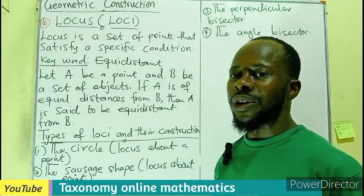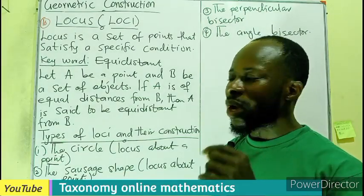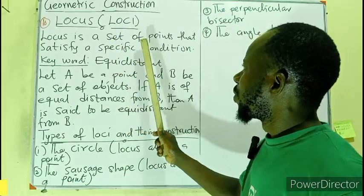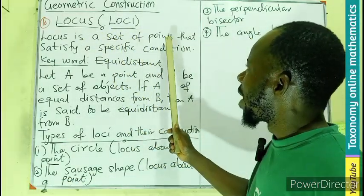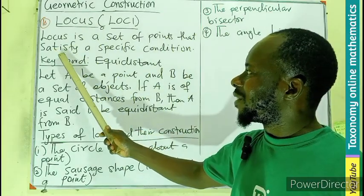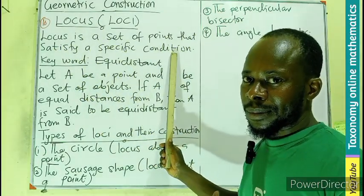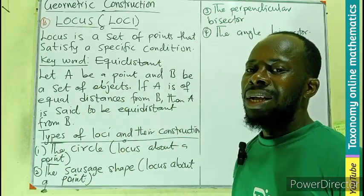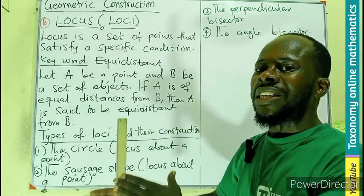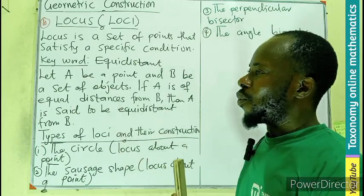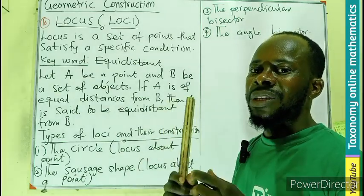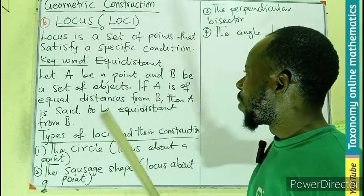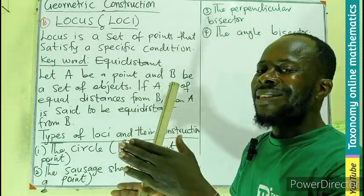So what does the locus simply mean when it comes to a construction? Locus is a set of points that satisfy a specific condition. You may be given some conditions in the question where the locus is to satisfy. So when we want to do that, we use some certain key words. That key word is equidistant.